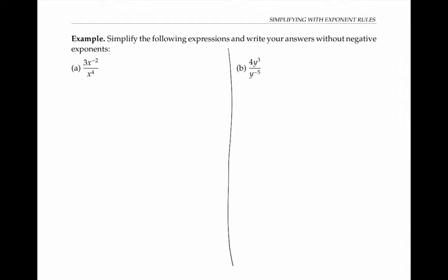For our first example, we want to simplify 3 times x to the minus 2 divided by x to the fourth. There are several possible ways to proceed. For example, we could use the negative exponent rule to write x to the minus 2 as 1 over x squared. All that gets divided by x to the fourth still. Notice that we only take the reciprocal of the x squared — the 3 stays where it is, because the exponent of negative 2 only applies to the x, not to the 3.